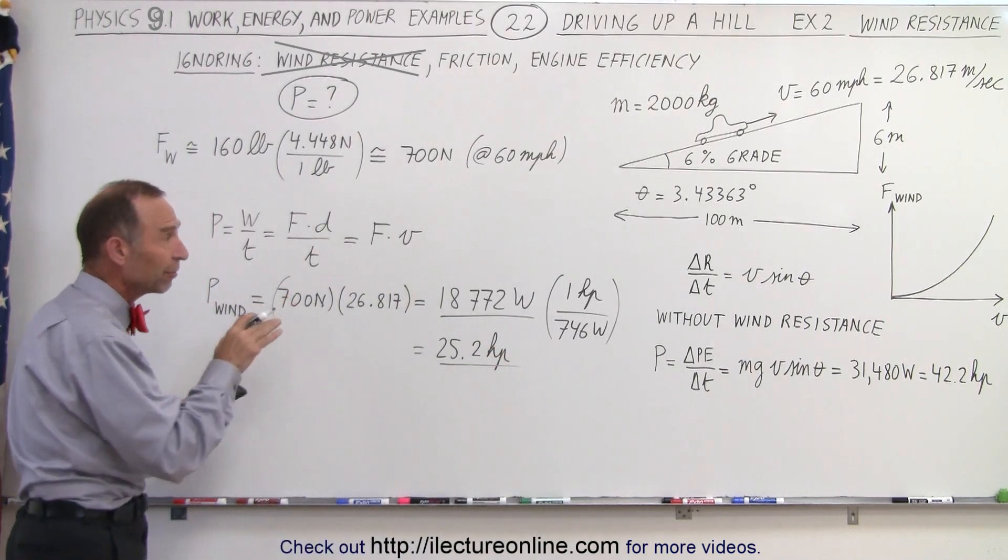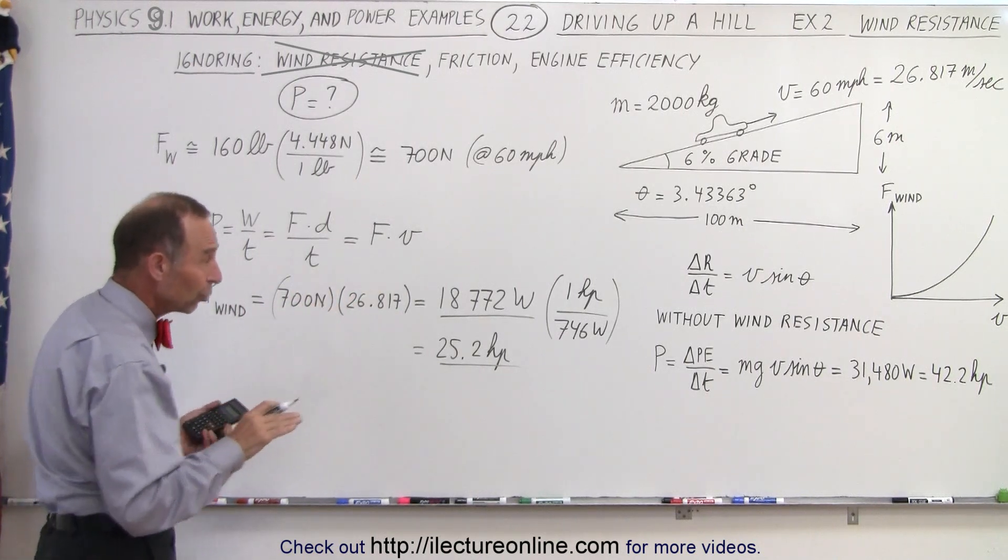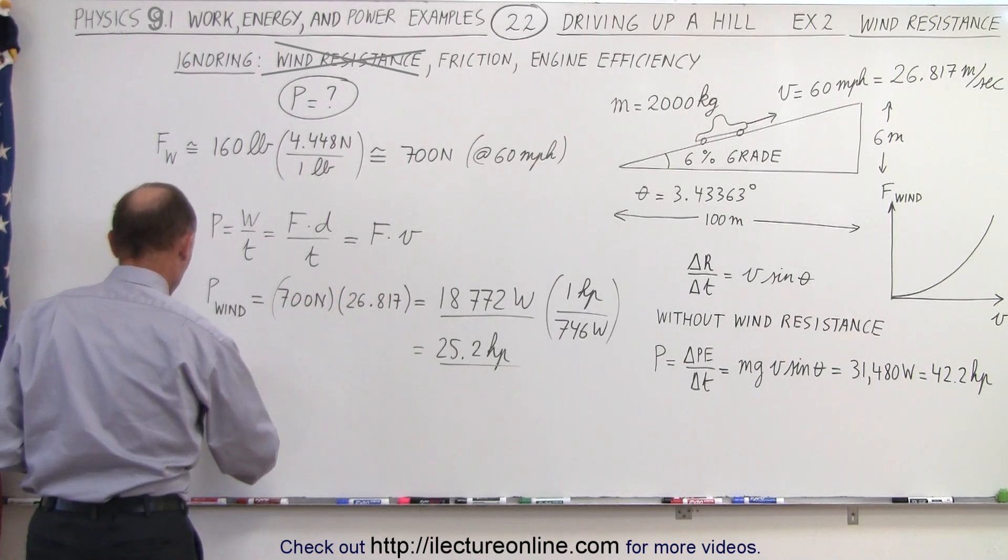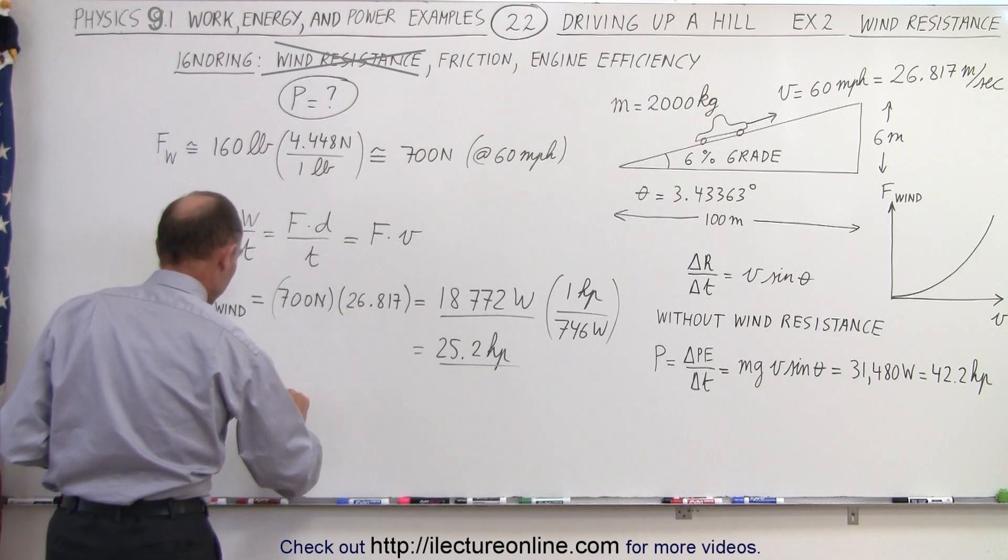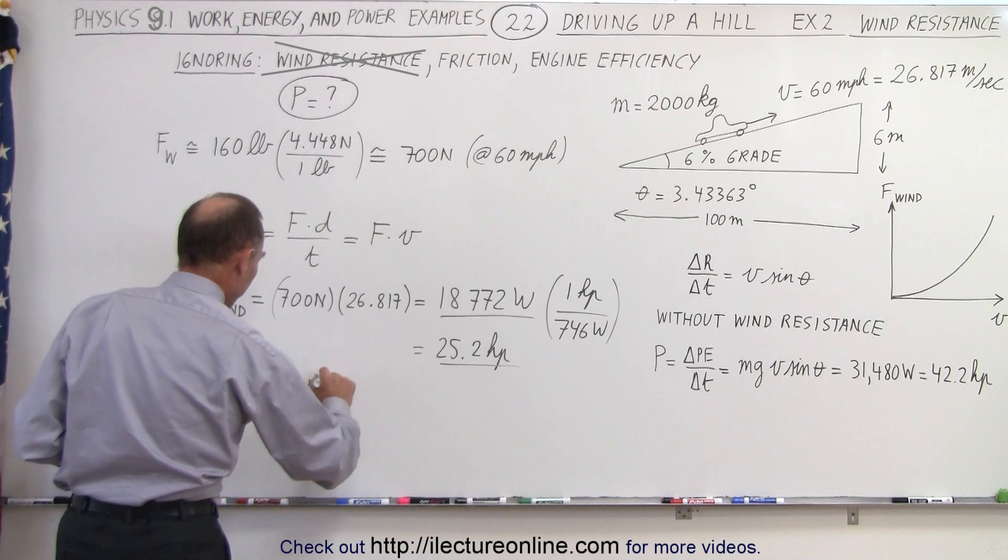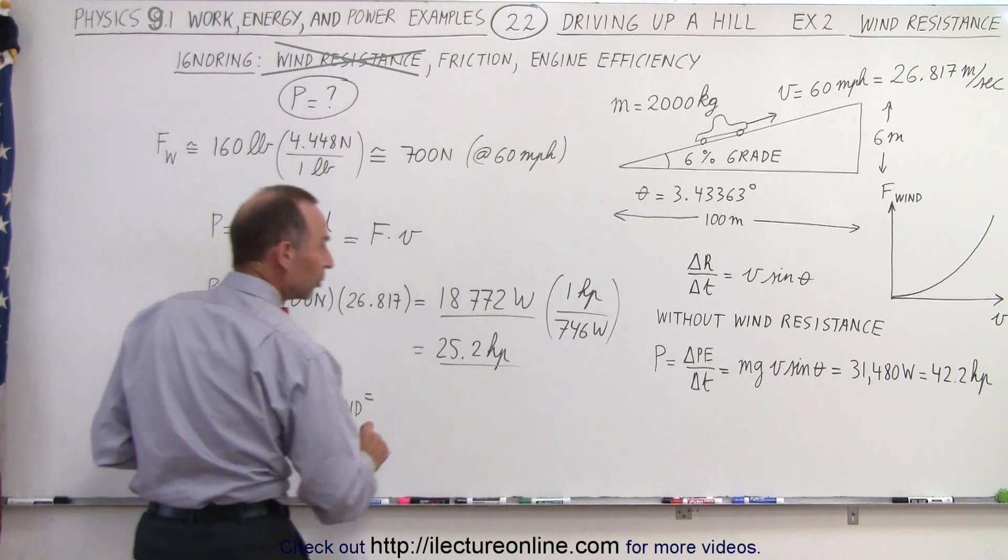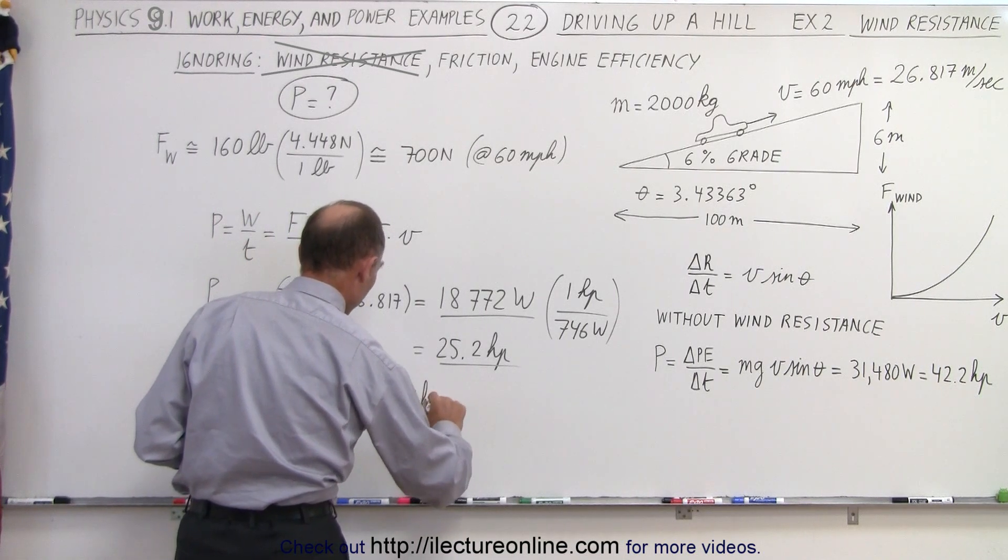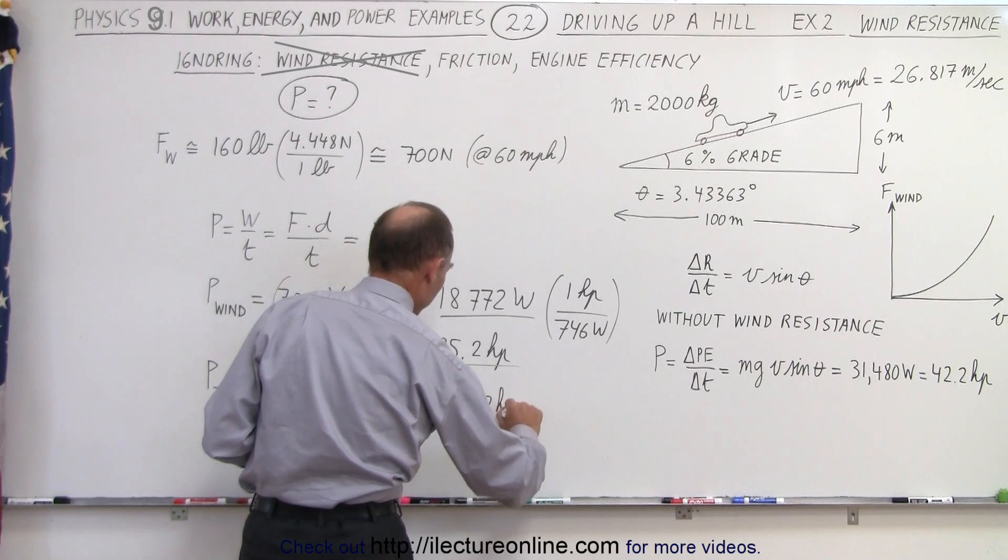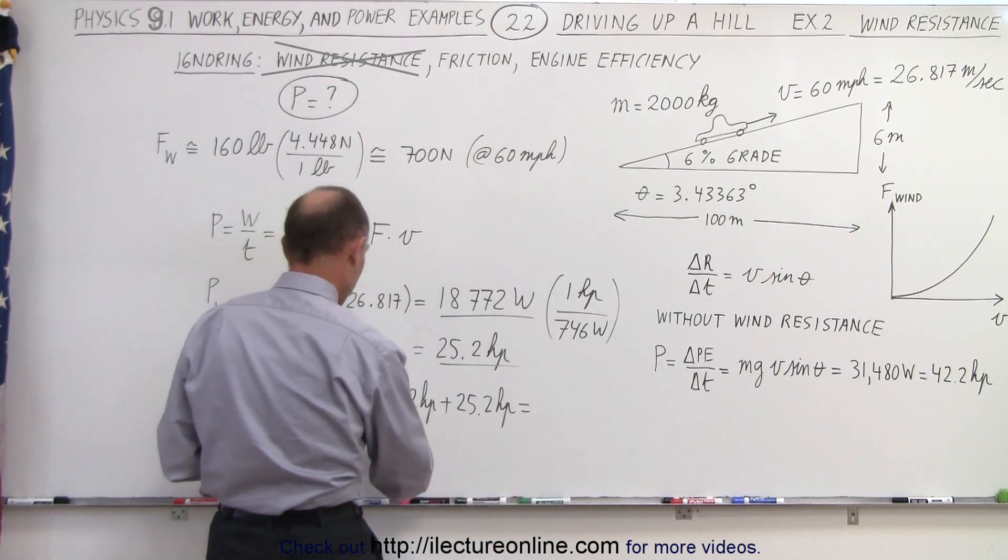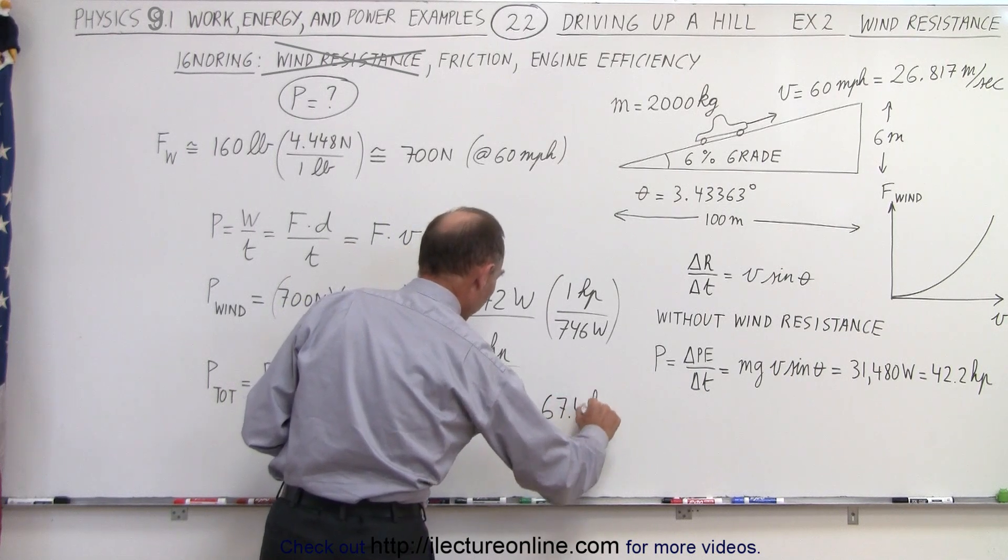So now, if we include the amount of power we need to drive up the hill, plus the amount of power we need to overcome wind resistance. So power total, when we only consider power to go up the hill, plus power to overcome wind resistance, will be equal to 42.2 horsepower, plus 25.2 horsepower. Together, that would be 67.4 horsepower.